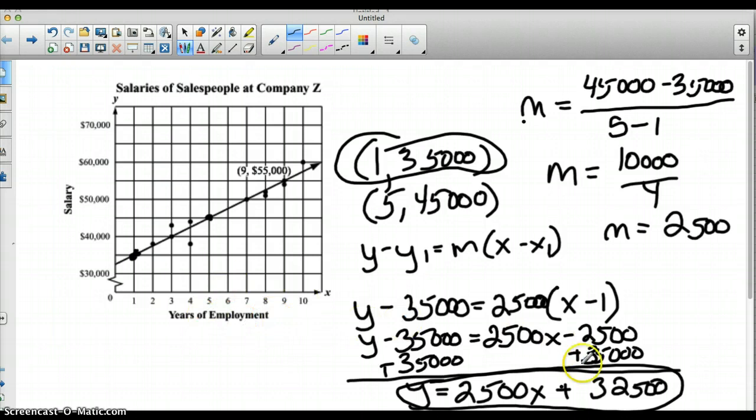Okay, so basically that means that my y-intercept should be around 32,500. If I look here, oh great, 32,500. My slope is 2,500 over 1, so for every time I rise up 2,500, I'm going to run over 1.